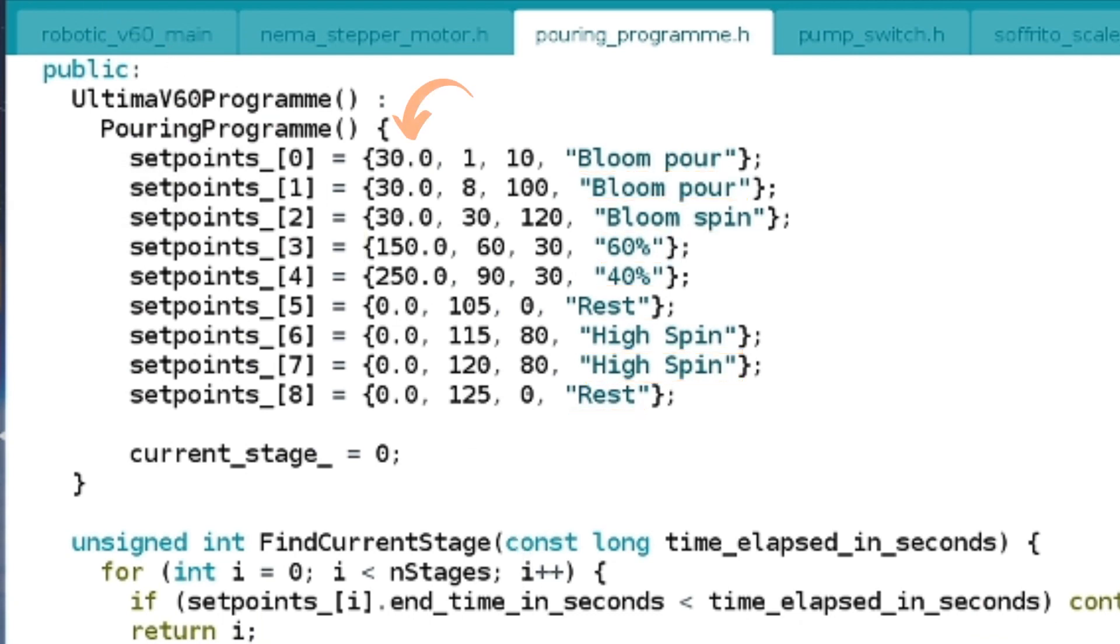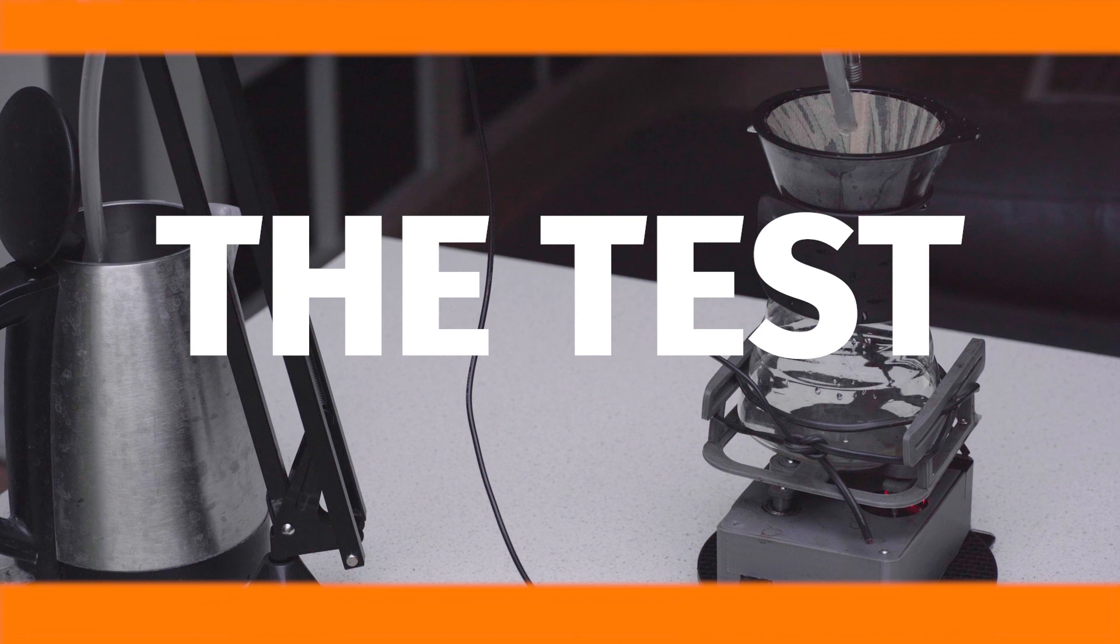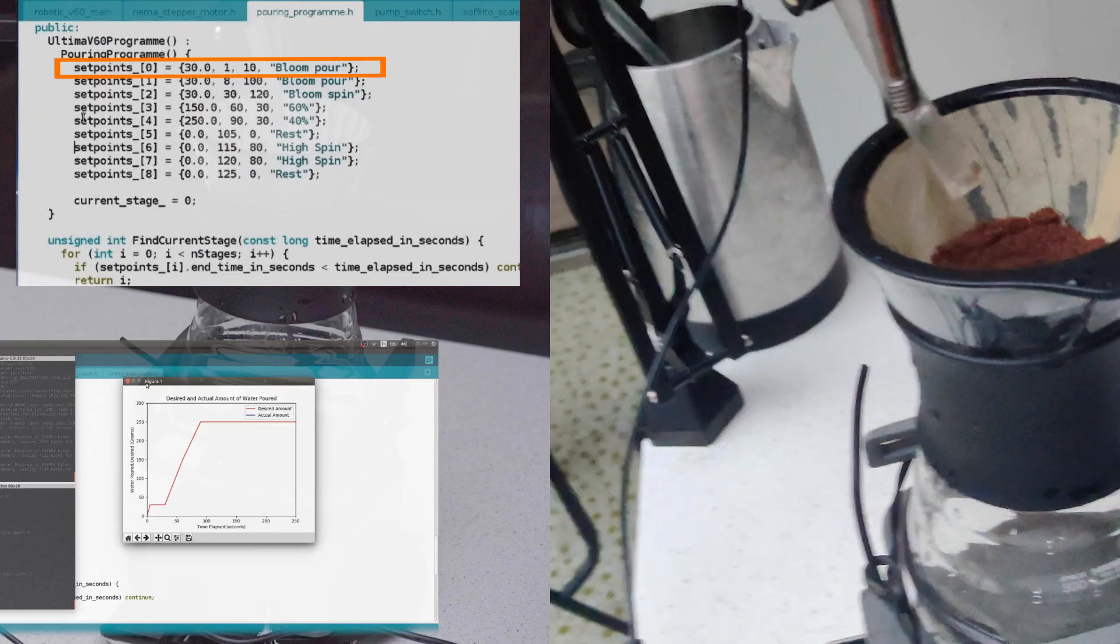What we see here are specific weights at specific times and some extra information about what rate to spin the platform at. You'll notice that I have a few more states than in James's recipe but most of these differ by spin speeds and they're there to facilitate the transition from different phases of the pour. Alright, with the hardware and software set, let's put this thing to the test.